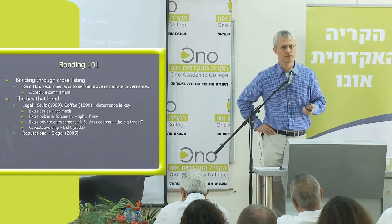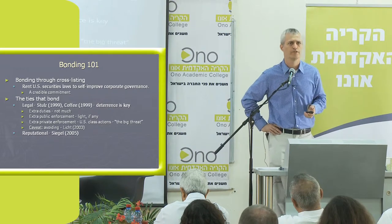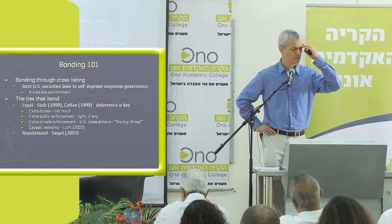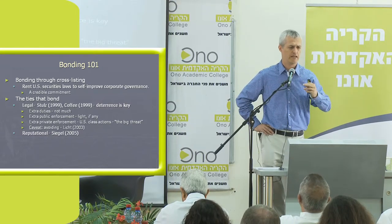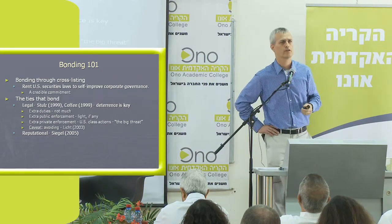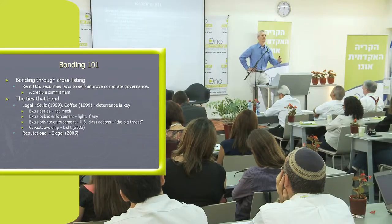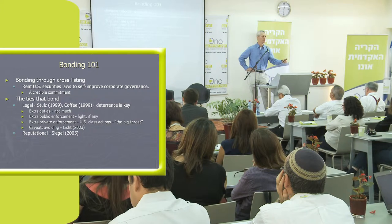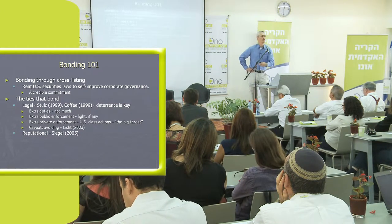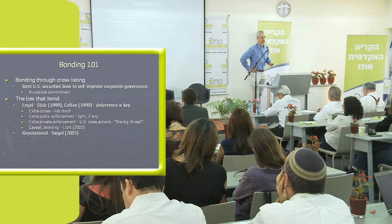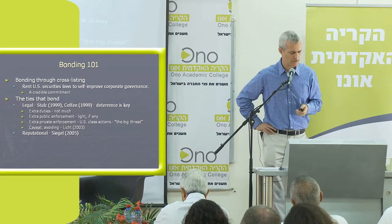There is some additional literature — some of which I'm involved in, some put forward by my partner Jordan Segal — essentially arguing that it's not only about deterrence. Foreign firms come to the United States not only to make a credible commitment through legal bonding. They may also want to take a step of reputational bonding: not fearing being sued, but wanting to establish a reputation for good behavior. I'll put my contribution aside for the sake of time.